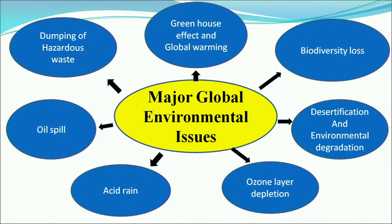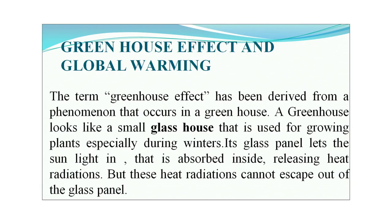The major global environmental issues we are going to cover today include: greenhouse effect and global warming, biodiversity loss, ozone depletion, desertification, acid rain, oil spills, nuclear disaster, and hazardous waste. The term greenhouse effect has been derived from a phenomenon that occurs in a greenhouse — a small glass house used for growing plants, especially during winters.